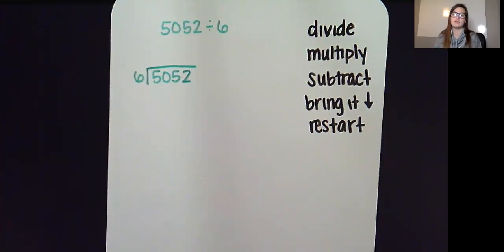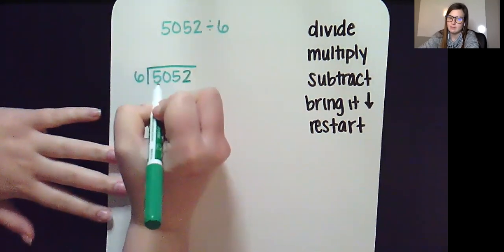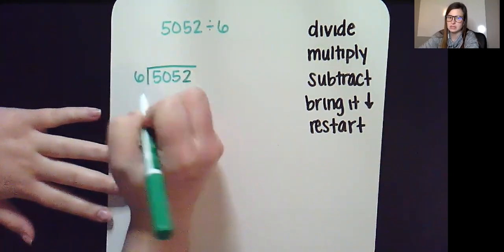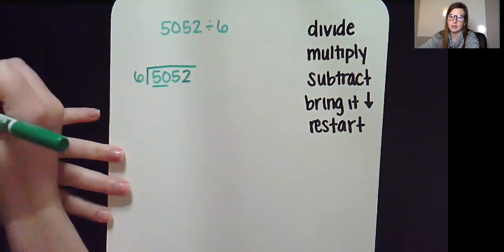Question 1: 5052 divided by 6. If I have 5, how many groups of 6 can I make? None. So I'm going to go ahead and include the neighbor to get us started.